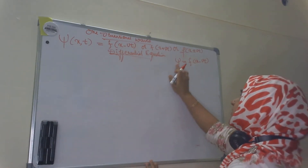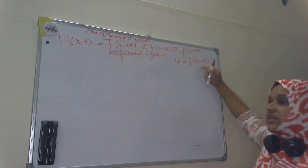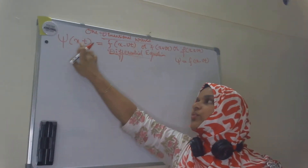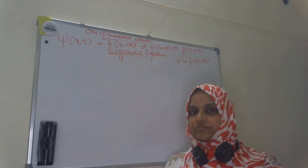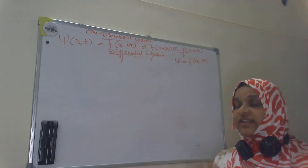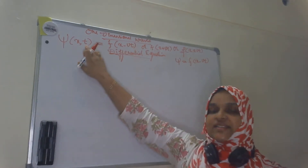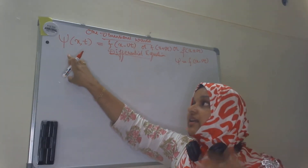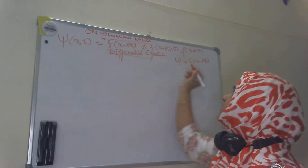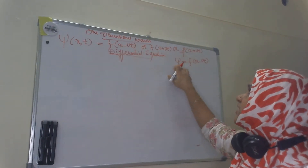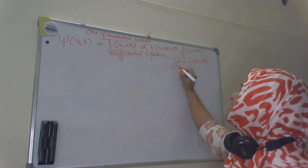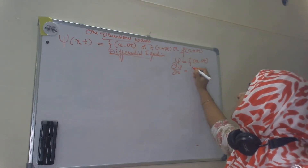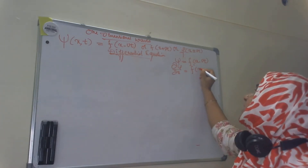This wave function psi has two variables: x and t. The psi is a function of position x as well as time t. If you want to take the derivative of psi with respect to x, you have to consider t as a constant. Keeping t as a constant, you can take the derivative of psi with respect to x — that derivative is known as the partial derivative. So, ∂psi/∂x = f'(x − vt), where f' represents the first derivative.